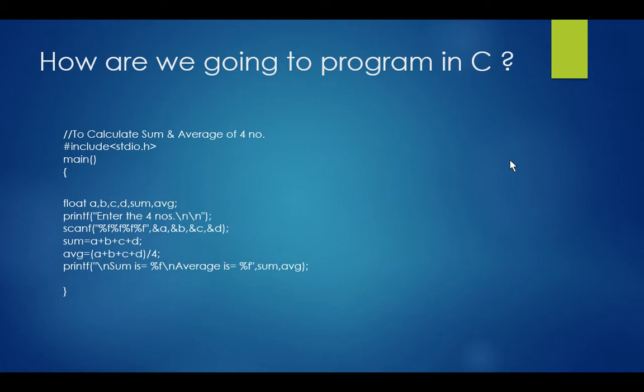A normal computer cannot understand this language, so we need something called a compiler. A compiler basically converts this sort of partial English into machine-understandable code. This is what a compiler does—it takes this and converts it into computer-understandable information.